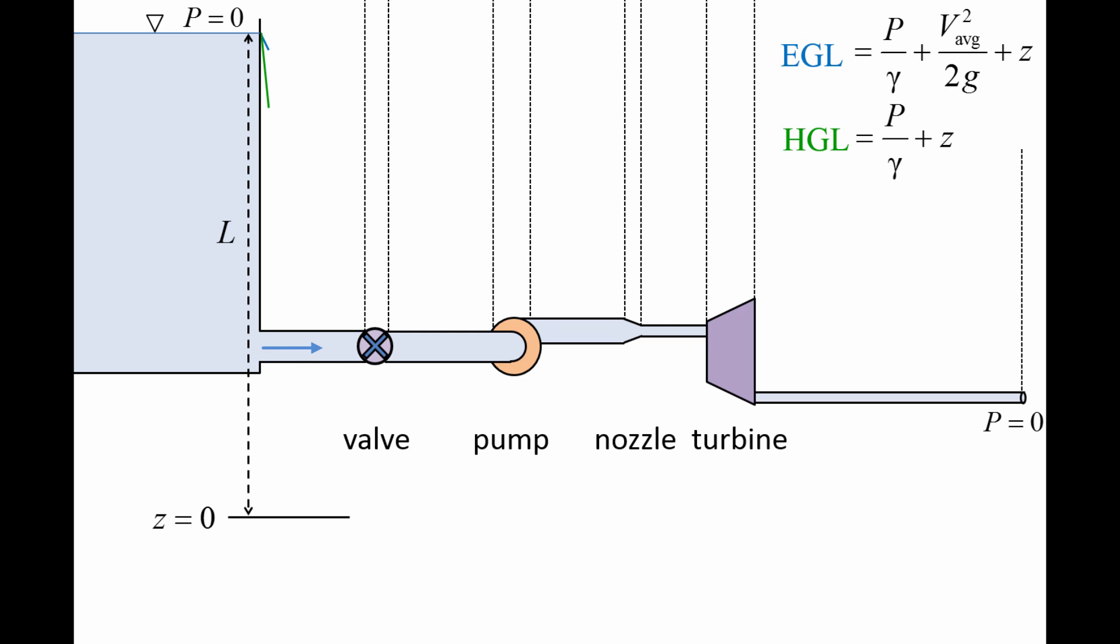However, the HGL declines more rapidly than the EGL since some of the potential energy of the liquid is also converted into kinetic energy.